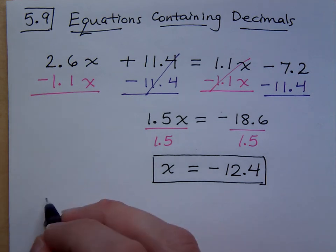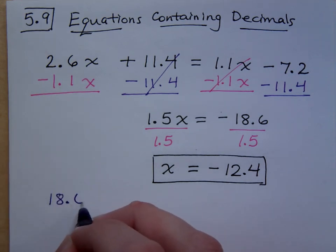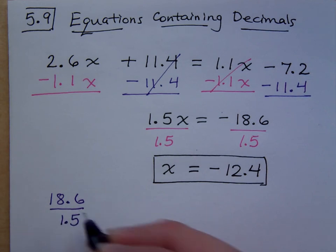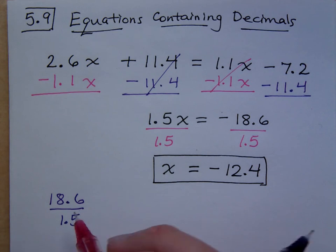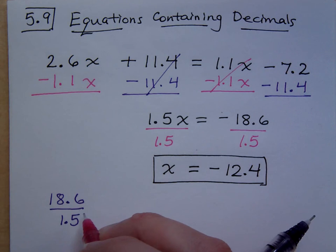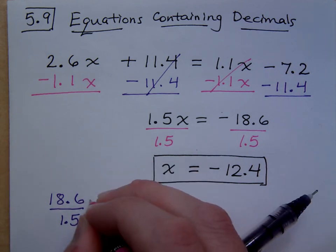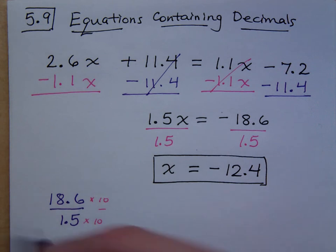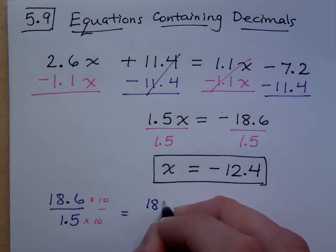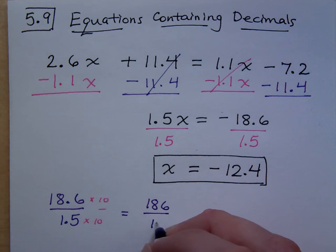So if I take 18.6 divided by 1.5, how can I do the math without using a calculator? First of all I notice that both of these guys are tenths, they have one decimal spot. So if I multiply times 10 over 10, this guy is a lot easier to work, and that gives me 186 over 15. Do you all agree with that?